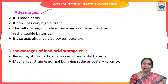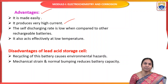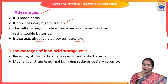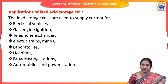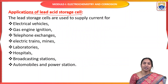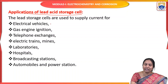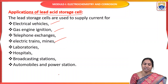The advantages of the lead acid storage battery are: it is made easily, produces very high current, has a low self-discharging rate compared to other rechargeable batteries, and works effectively at low temperatures. The disadvantages are: recycling causes environmental hazards, and mechanical strain and normal bumping reduce battery capacity. Applications include automobiles, electrical vehicles, gas engine ignition, telephone exchanges, electronic trains, mines, laboratories, hospitals, broadcasting stations, and power stations.